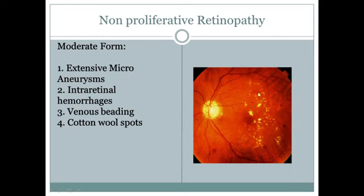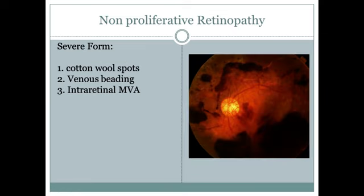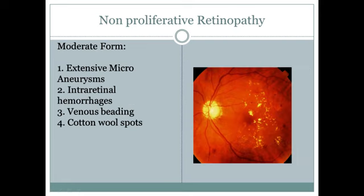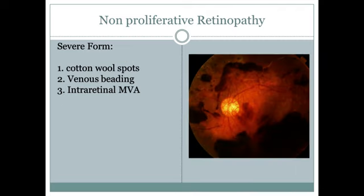In the severe form you will see massive intraretinal microvascular aneurysms. To summarize: mild form has microaneurysms only; moderate form has cotton wool spots plus microaneurysms; severe form has massive intraretinal macrovascular aneurysms.